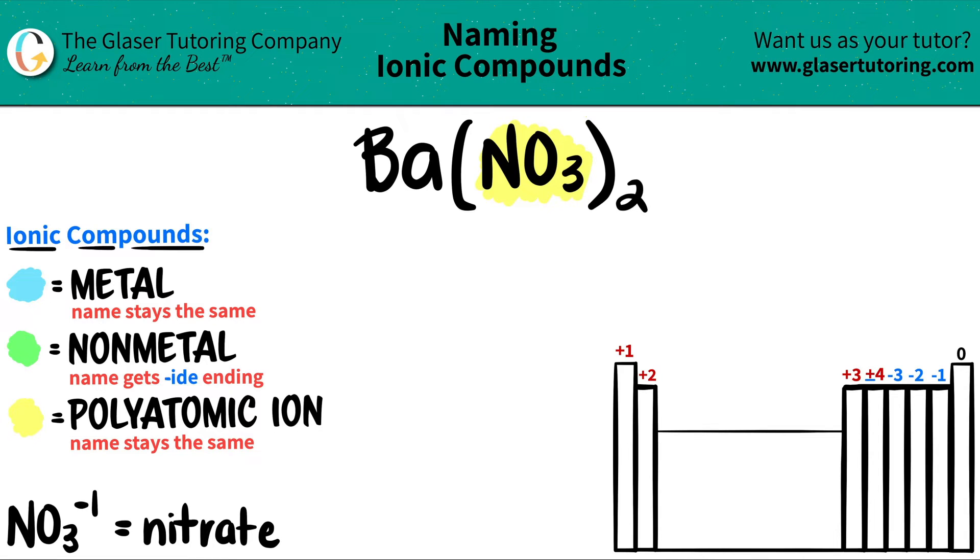And the other element is Ba, which is barium. Barium is a metal because it's in group two on the periodic table. It's down here. All of group two are metals. They're alkaline earth metals. So we have an ionic compound. We've got a metal and a polyatomic ion.